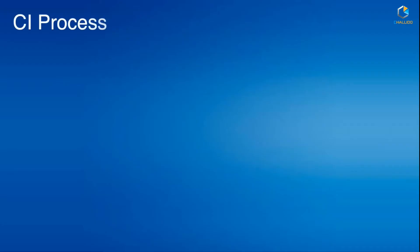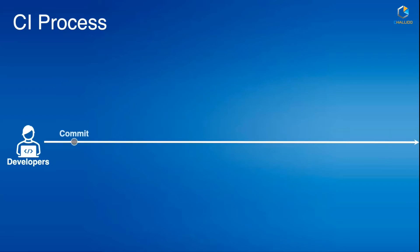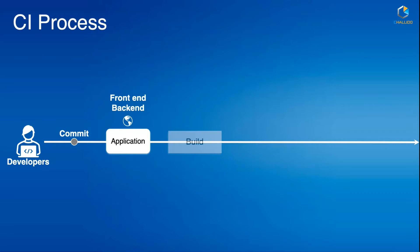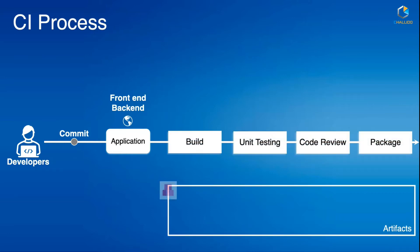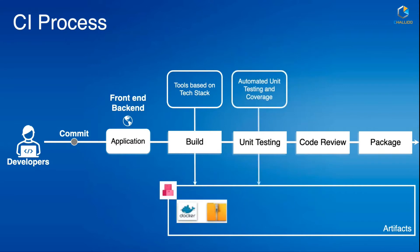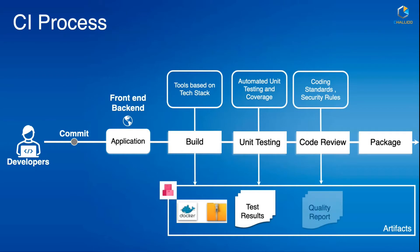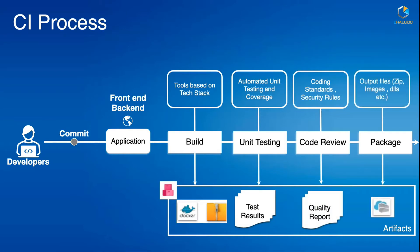In a CI process, a developer working on a feature commits code — whether it's front-end, back-end, or anything else. That code is picked up and goes through a build process. Depending on the platform, a corresponding tool is used to build the code and generate the output file. If something goes wrong — for example, if the code is not building — it will fail the CI process and notify the team so the developer can fix the code and move ahead.